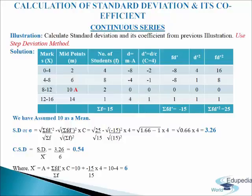We will calculate standard deviation and its coefficient from the previous illustration. For the solution we will make a table of 8 columns. In the first column we will write marks, denoted by letter x: 0 to 4, 4 to 8, 8 to 12, and 12 to 16. In the second column we will write midpoints, denoted by letter m: 2, 6, 10, and 14. We have taken 10 as assumed mean. In the third column we will write number of students, denoted by letter f: 4, 8, 2, and 1. We will add up the frequencies and get sigma f equals to 15.